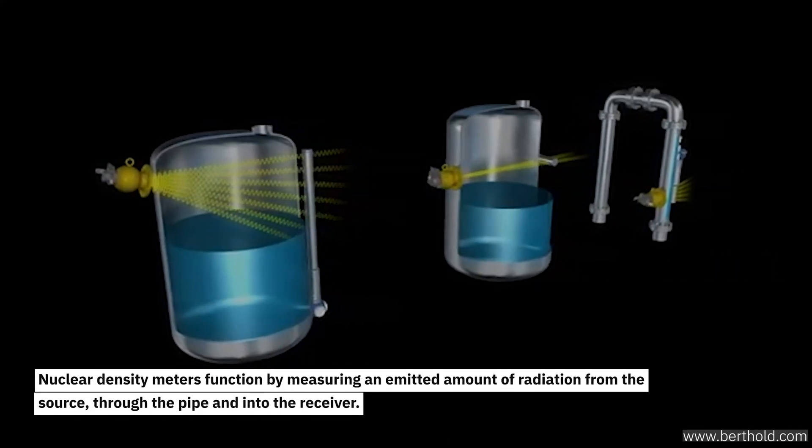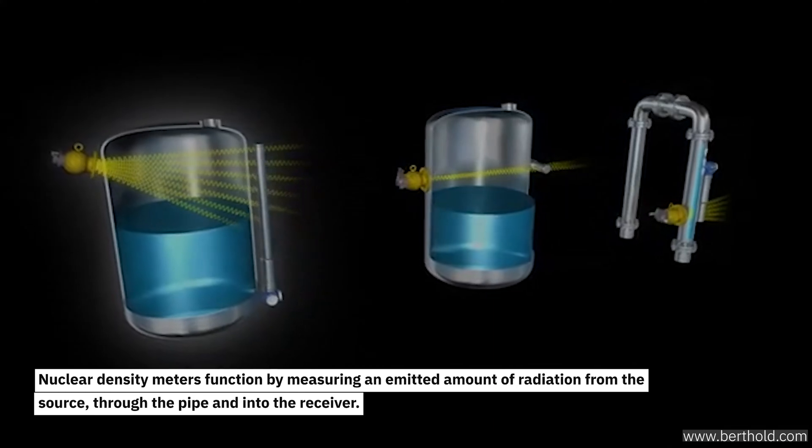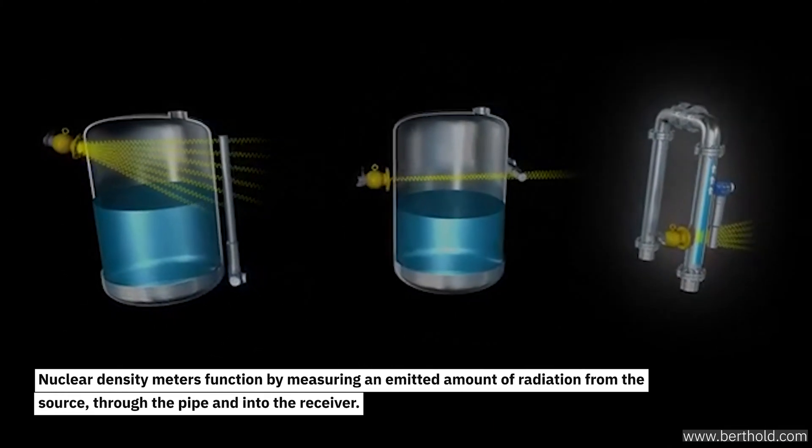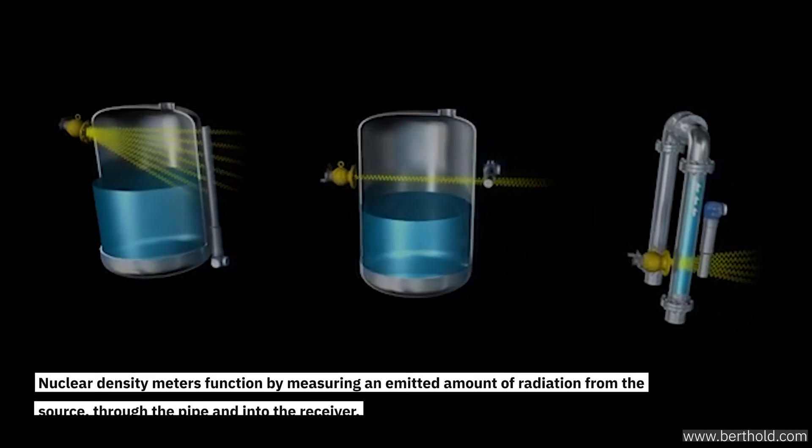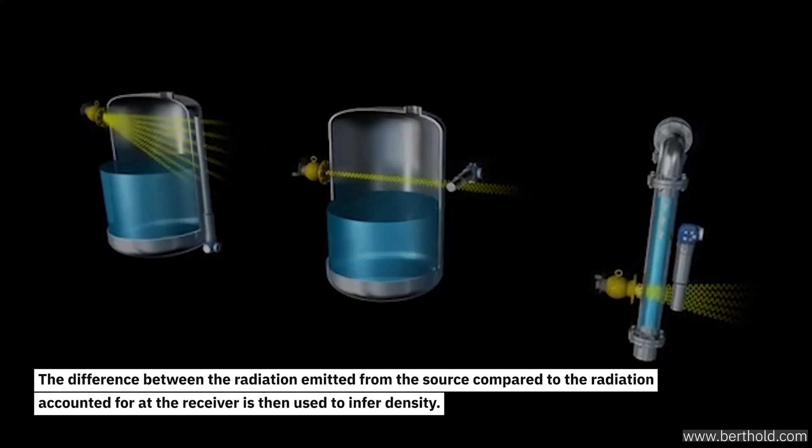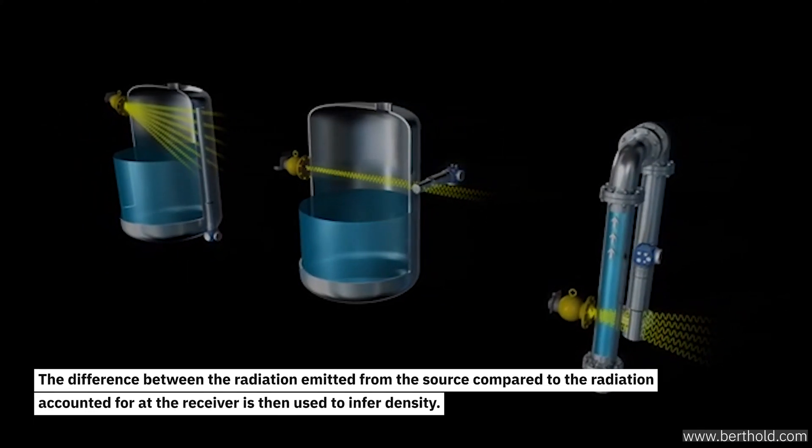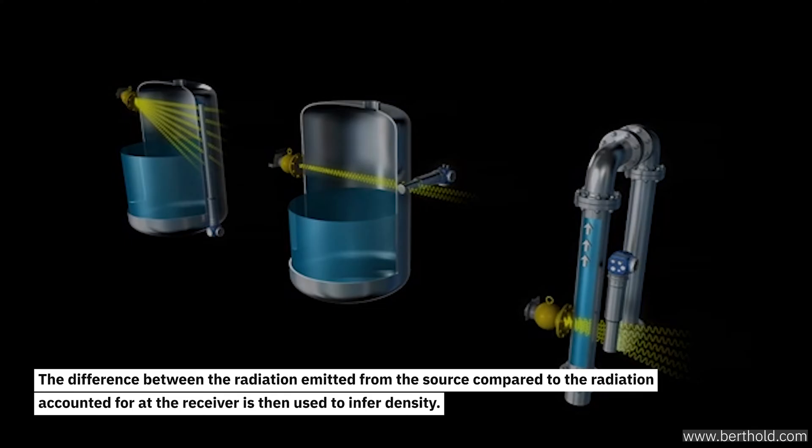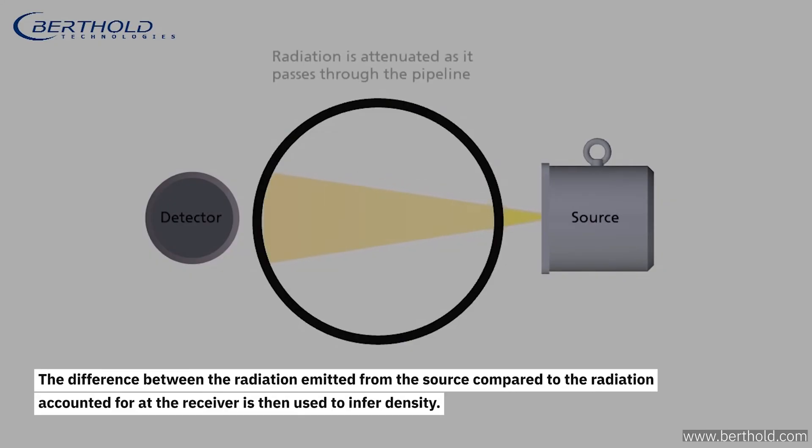Nuclear density meters function by measuring an emitted amount of radiation from the source, through the pipe, and into the receiver. The difference between the radiation emitted from the source compared to the radiation accounted for at the receiver is then used to infer density.